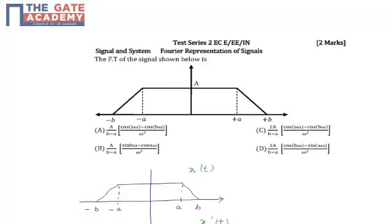Hello students, the following question is from test series 2, subject signals and system, chapter Fourier representation of the signal. The question asks for 2 marks: Fourier transform of the signal shown below is?